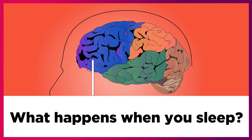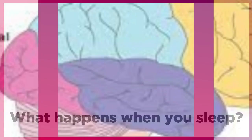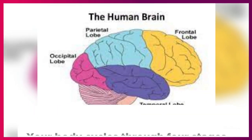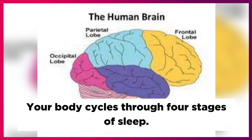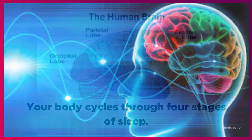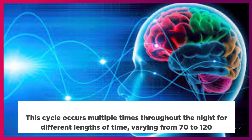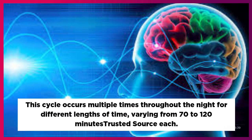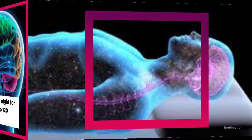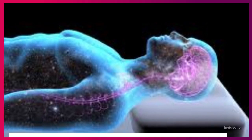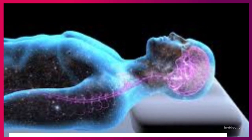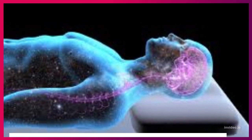What happens when you sleep? Your body cycles through 4 stages of sleep. This cycle occurs multiple times throughout the night for different lengths of time, varying from 70 to 120 minutes each. The stages generally repeat about 4 to 5 times during a 7 to 9 hour sleep period.